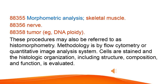Morphometric analysis — skeletal muscle, nerve, tumor, e.g., DNA ploidy. These procedures may also be referred to as histomorphometry. Methodology is by flow cytometry or quantitative image analysis system. Cells are stained in the histologic organization, including structure, composition, and function, which is evaluated.